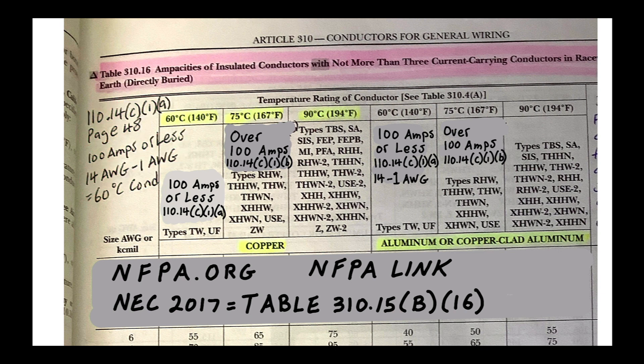Now looking at the 75°C column — and we're talking copper here. If the question doesn't specify conductor material, assume copper unless told otherwise. The 75°C column applies to loads over 100 amps per 110.14(C)(1)(b). If the question specifies aluminum, then use aluminum; otherwise it's copper.